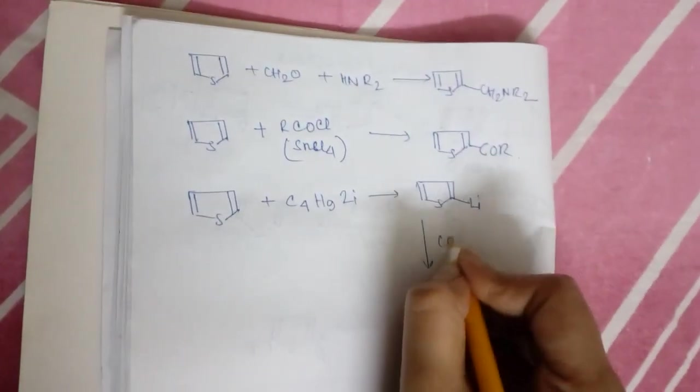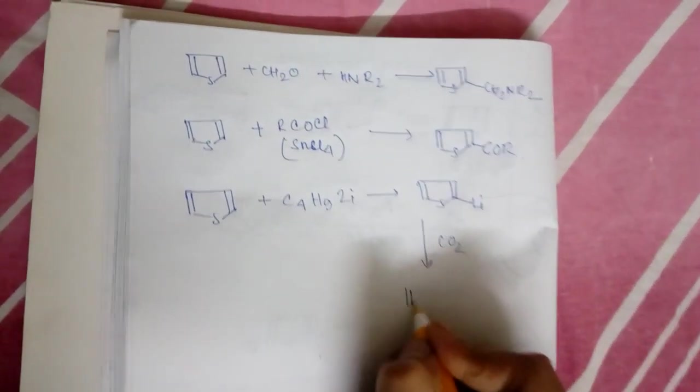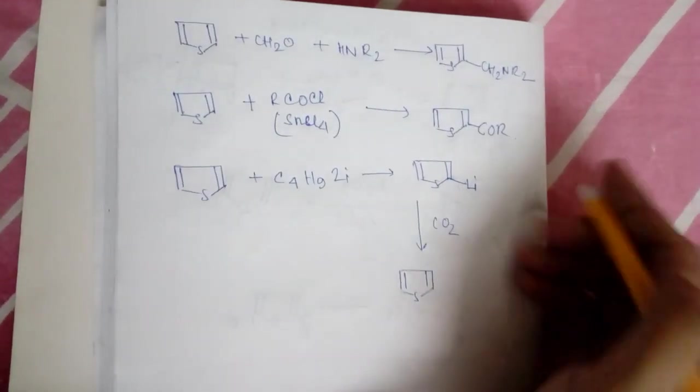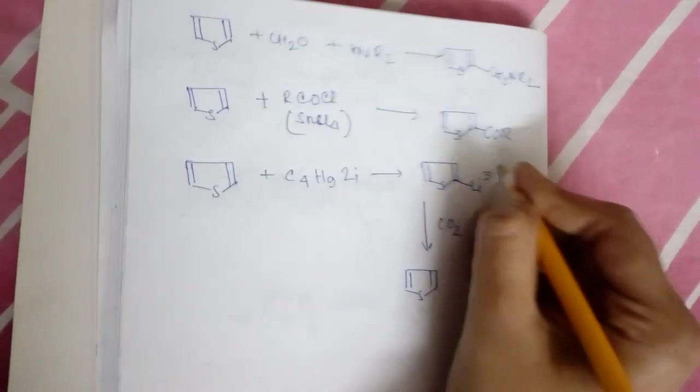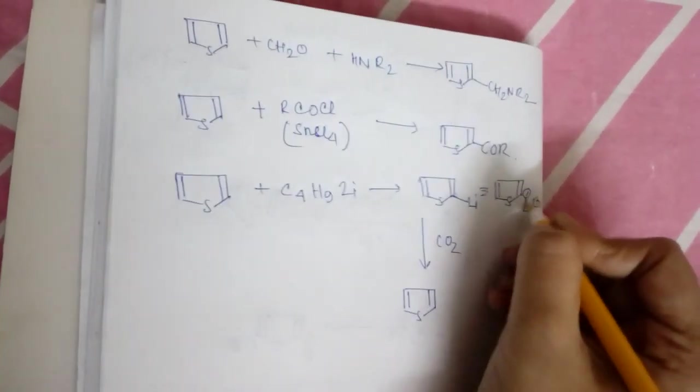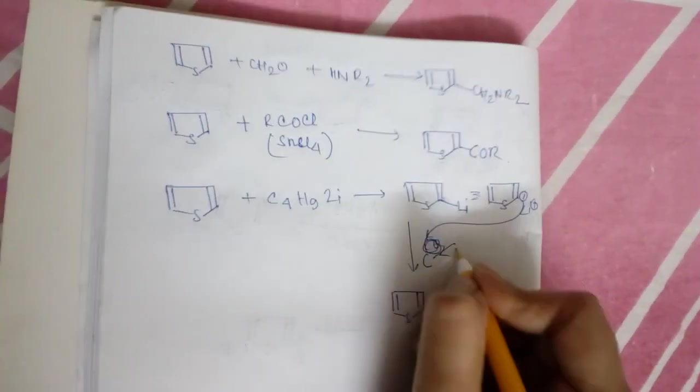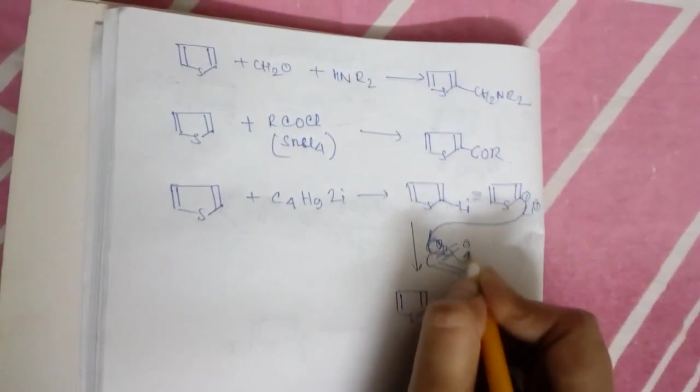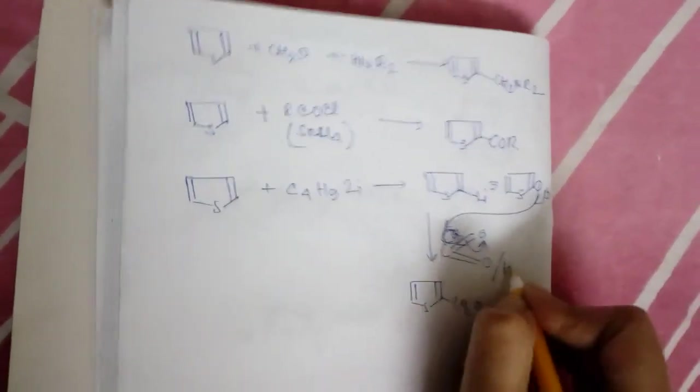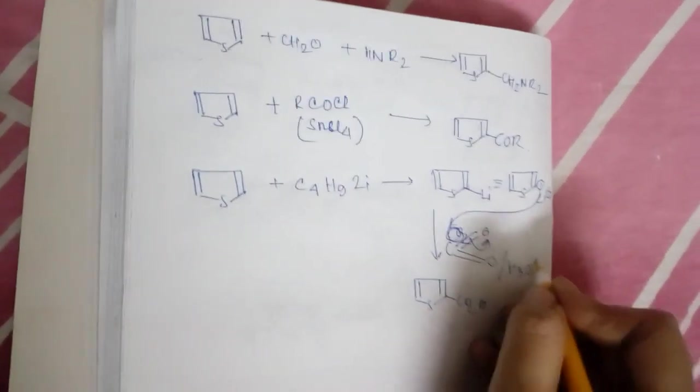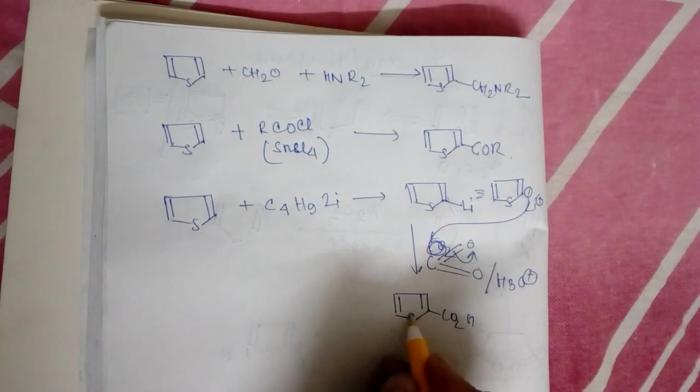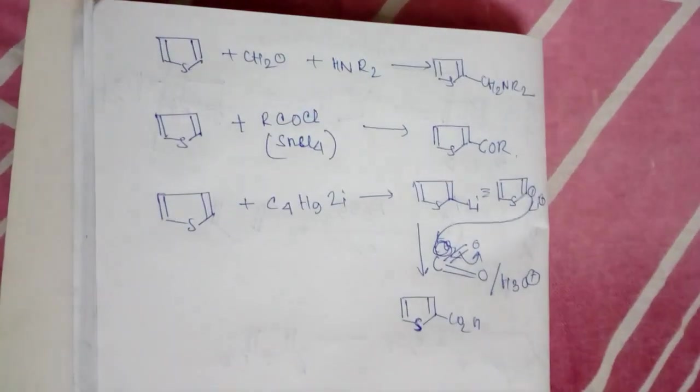It will also react with lithium compound like butyl lithium (C4H9Li). It will give a lithiated thiophene, and by addition of CO2, we can add this lithium compound. It will attack this carbon dioxide molecule and here a CO2H group will attach. After hydrolysis, this way we can use thiophene in conversion. Thank you.